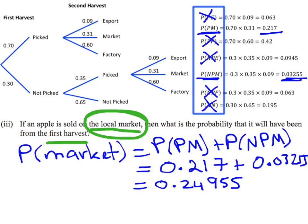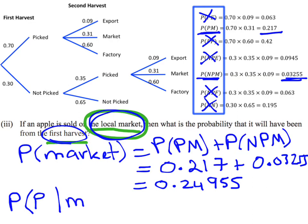What I've found so far is this first part - the probability it's sold at the local market. This is the condition, this is the subgroup. We now know the size of the subgroup: the apples sold at market make up 24.955% of all the apples on the trees. Now we want to know what the probability of it coming from the first harvest is, so we turn it into a conditional probability - the probability of being picked in the first harvest, given that it came from the market.